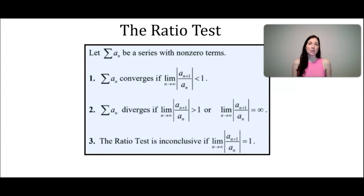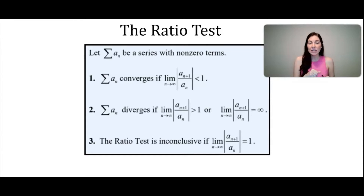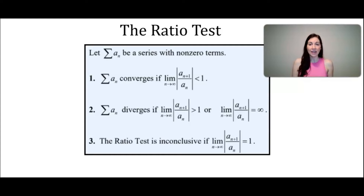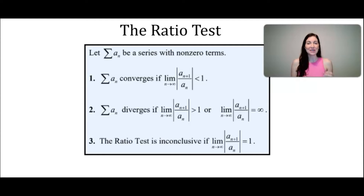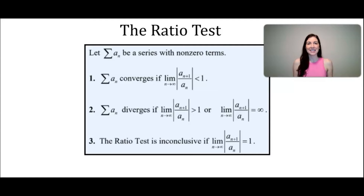The ratio test involves taking the limit as n approaches infinity of the absolute value of the a_(n+1) term divided by the a_n term. If that limit of the ratio is less than 1, the series converges. If the limit of that ratio is greater than 1, the series will diverge. And if the limit of that ratio is equal to 1, the ratio test is inconclusive.